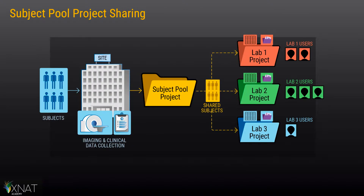In a more complex scenario, you might be working with a set of subjects that have been recruited for multiple related studies. One example of this would be in a clinical trial setting. These subjects would be particularly useful in longitudinal studies where newly collected data can be compared over time to what's been collected already. In this scenario, you might create a subject pool project and set this project to protected, so that other researchers with access to your XNAT can see that project and request access. Those new researchers would be given collaborator access to the subject pool project, which gives them the ability to see your subject data and share it into their own project.